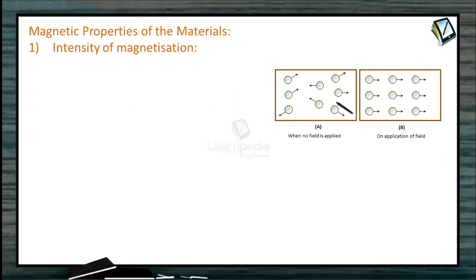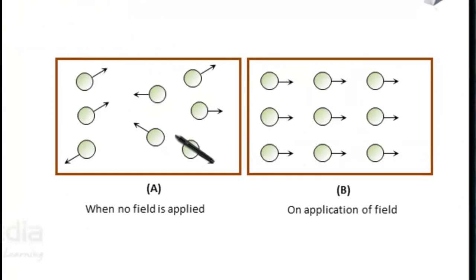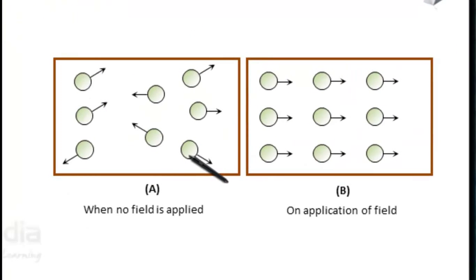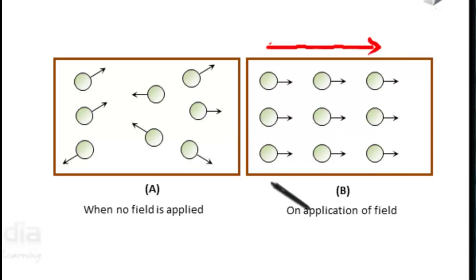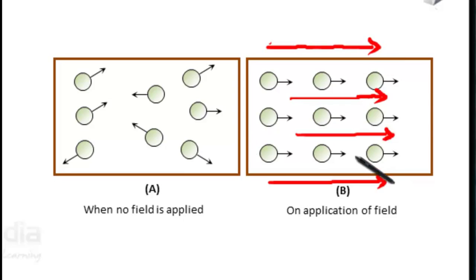First, let us study the intensity of magnetization. Each substance contains a large number of atoms. The magnetic moments of these atoms are randomly oriented and there is no net magnetic moment in any volume of the material containing thousands of atoms. However, when the material is kept in an external magnetic field, atomic dipoles try to align parallel to the field. The degree of alignment increases if the intensity of the applied field increases.